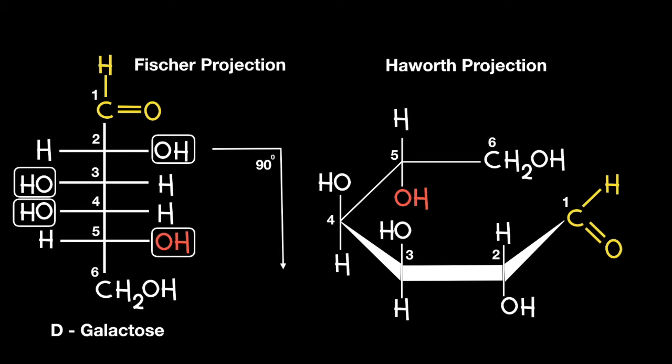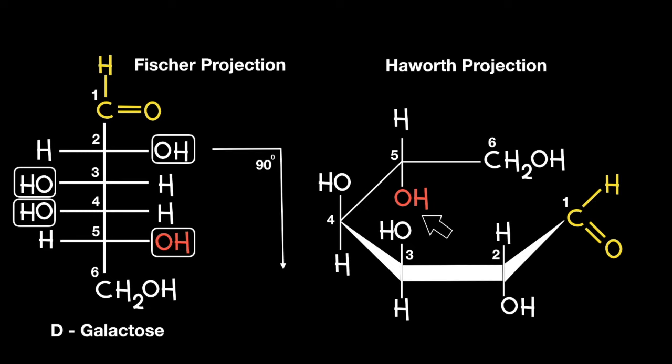Now both galactose and glucose prefer to exist in nature in the form of a 6-membered ring as this is more thermodynamically stable. Hence in order to complete the cyclic structure a conformational change needs to occur. More specifically, the OH group currently located below carbon number 5 needs to occupy the position of the CH2OH. Fortunately, single covalent bonds are able to rotate around their central axis, and more specifically in this case around carbon 5. This results in the following conformational structure.